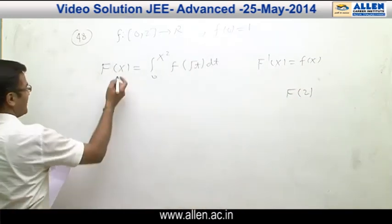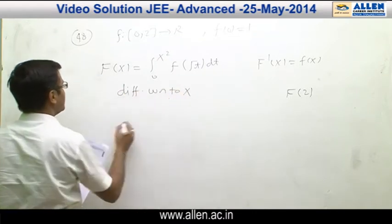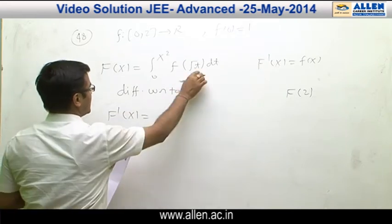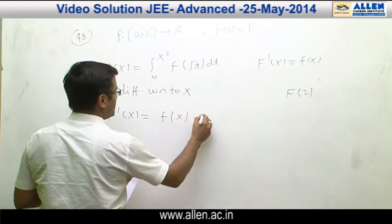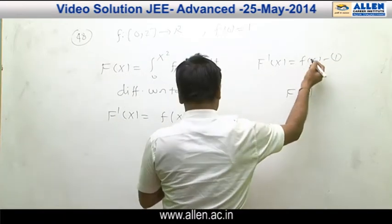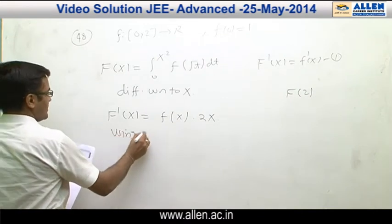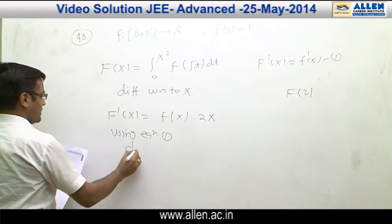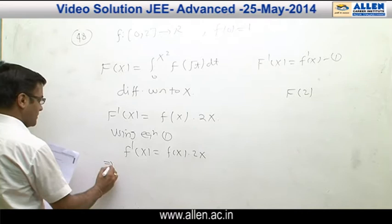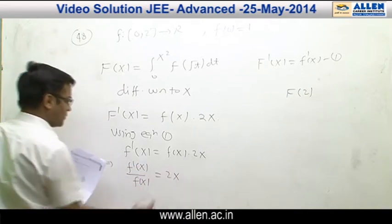Let us start with the derivative of f(x), differentiating with respect to x. Applying the Leibniz rule, f′(x) equals f(x²) · 2x. But we are given that f′(x) = f(x), so using that condition we can write f′(x) = f(x) · 2x. This implies f′(x) / f(x) = 2x.